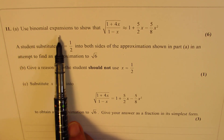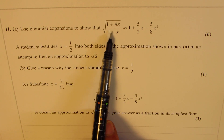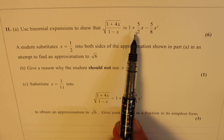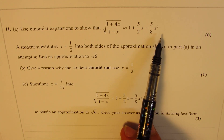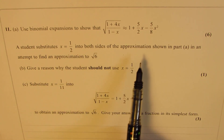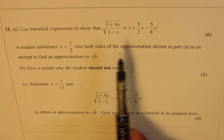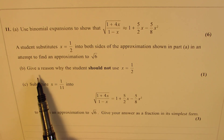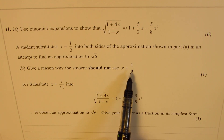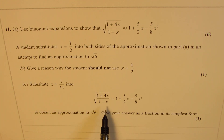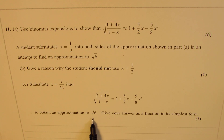Part A: use binomial expressions to show that the square root of (1 plus 4x) divided by (1 minus x) is approximately equal to 1 plus 5/2 x minus 5/8 x squared. A student substitutes x equals one half into both sides of the approximation in part A in an attempt to find an approximation to square root of 6. Give a reason why the student should not use x equals one half. Part C: substitute x equals 1 over 11 to obtain an approximation to square root 6 as a fraction in its simplest form.